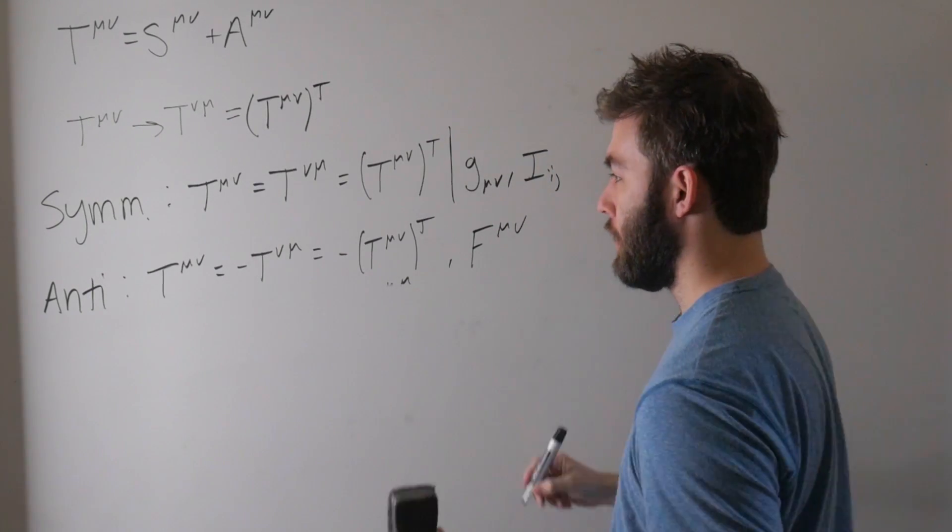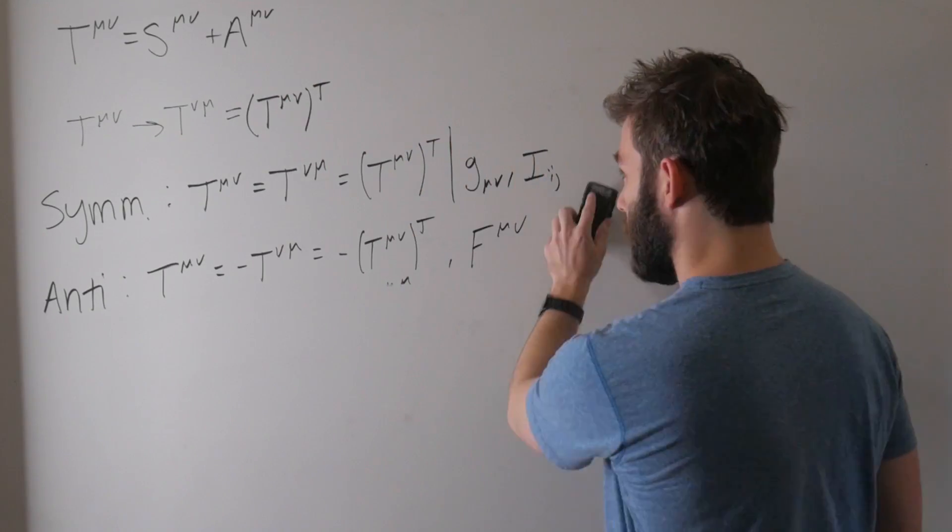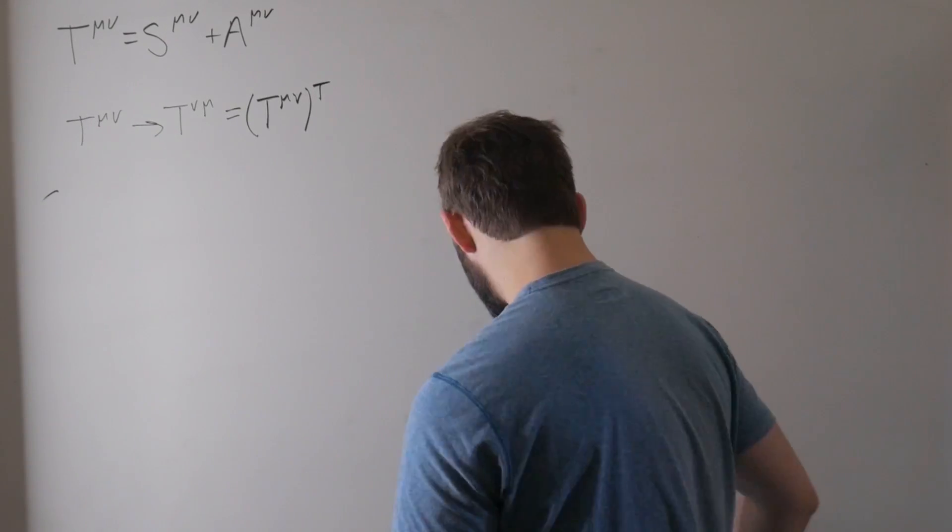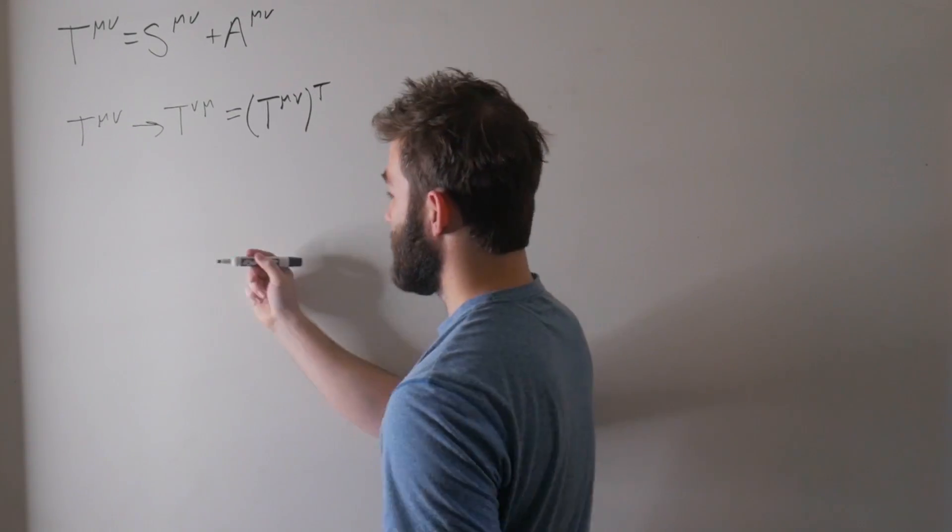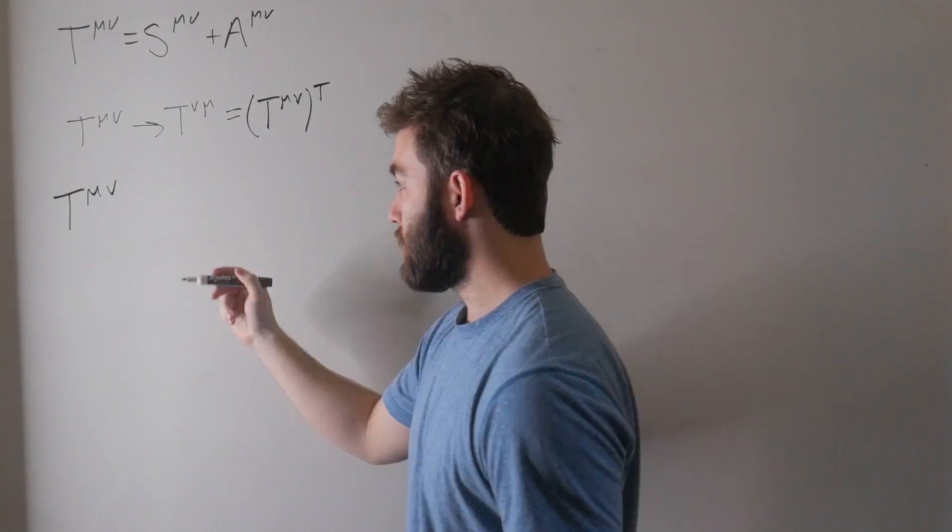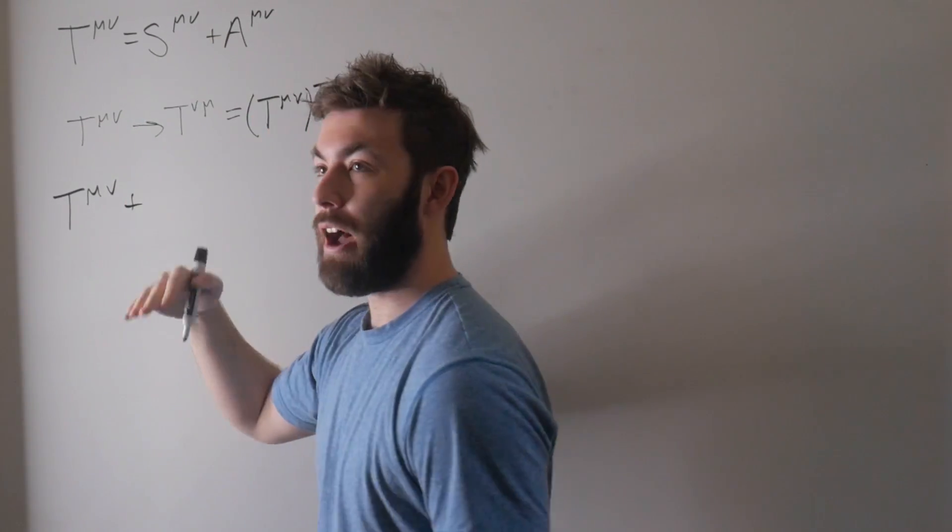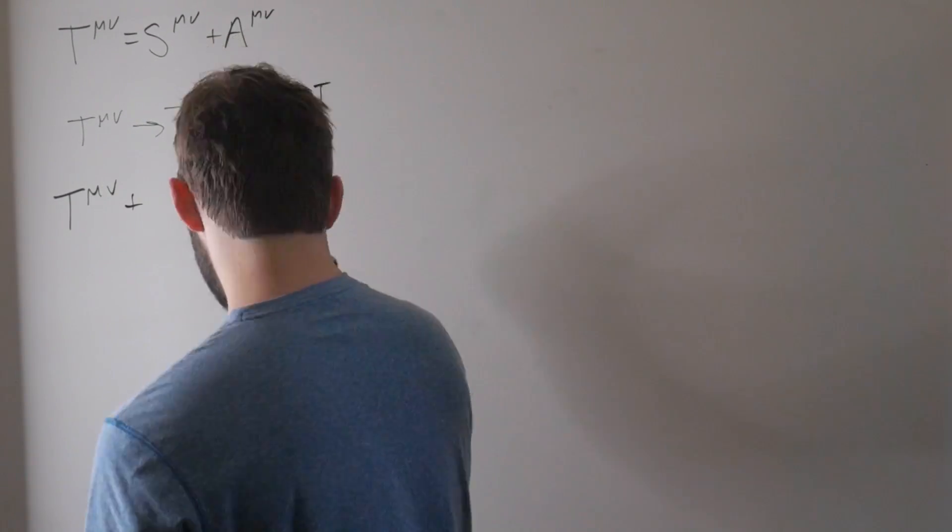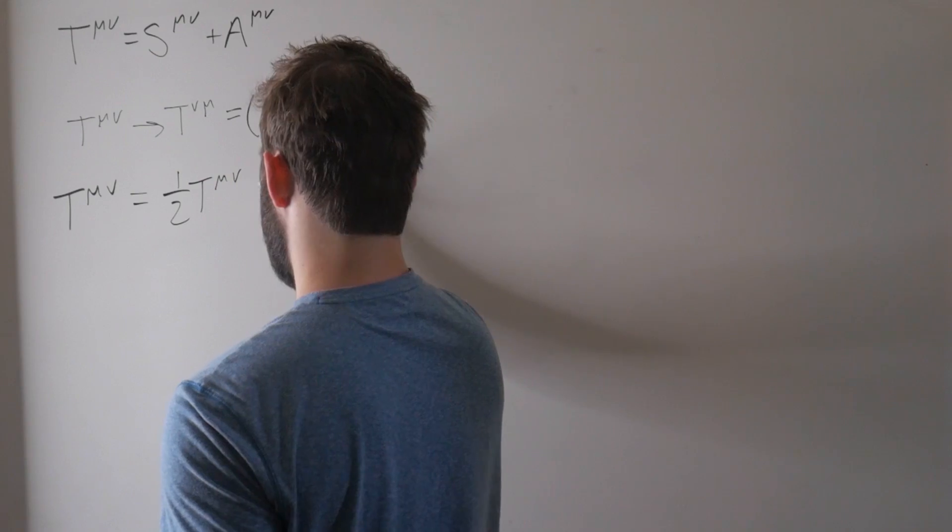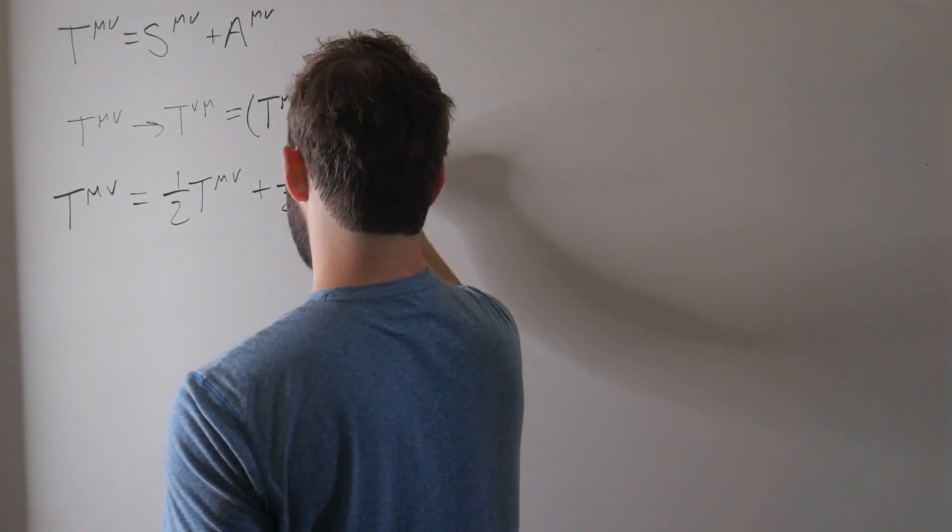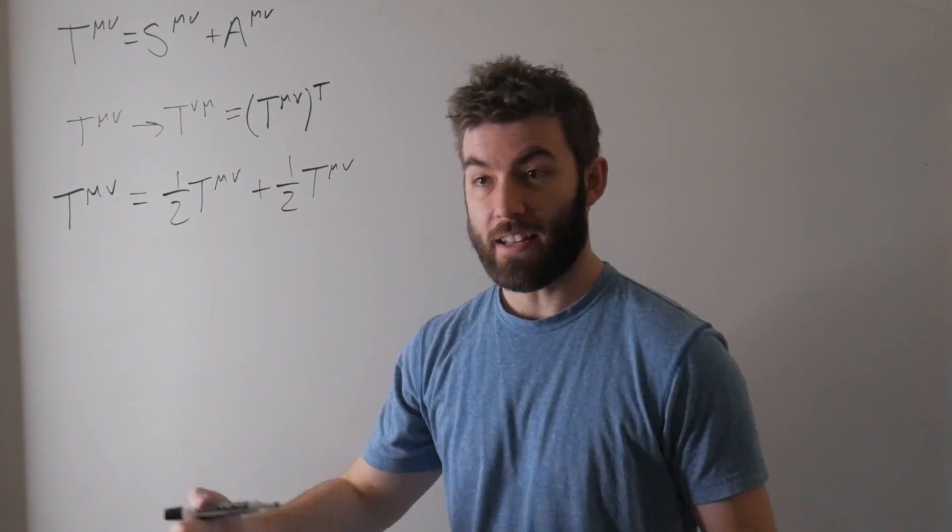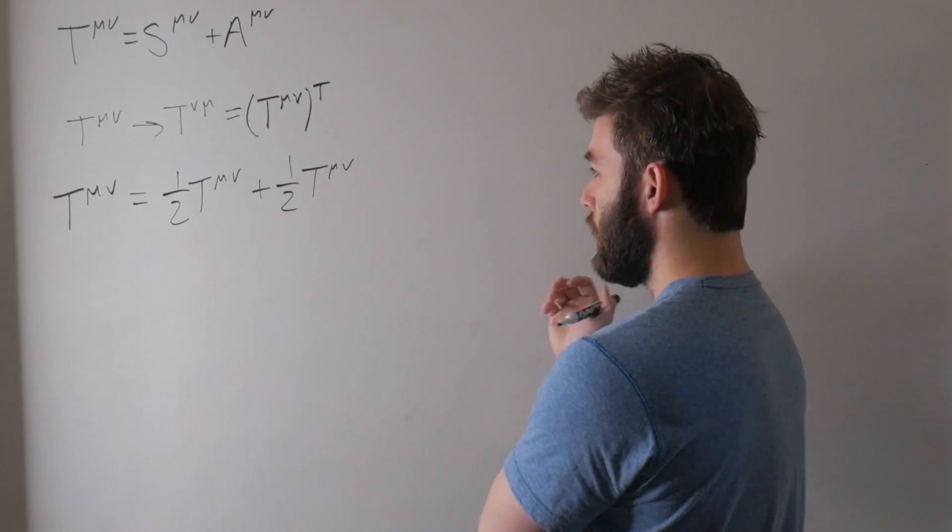Okay, so now that we got our terminology down, let's get to proving this here. And we're going to do it by just adding and subtracting the same things from just our T^μν. So if we take T^μν, what I want to do is I want to add and subtract, well, first, let's just add half of it plus half of it. Let's just do that. So this is true.